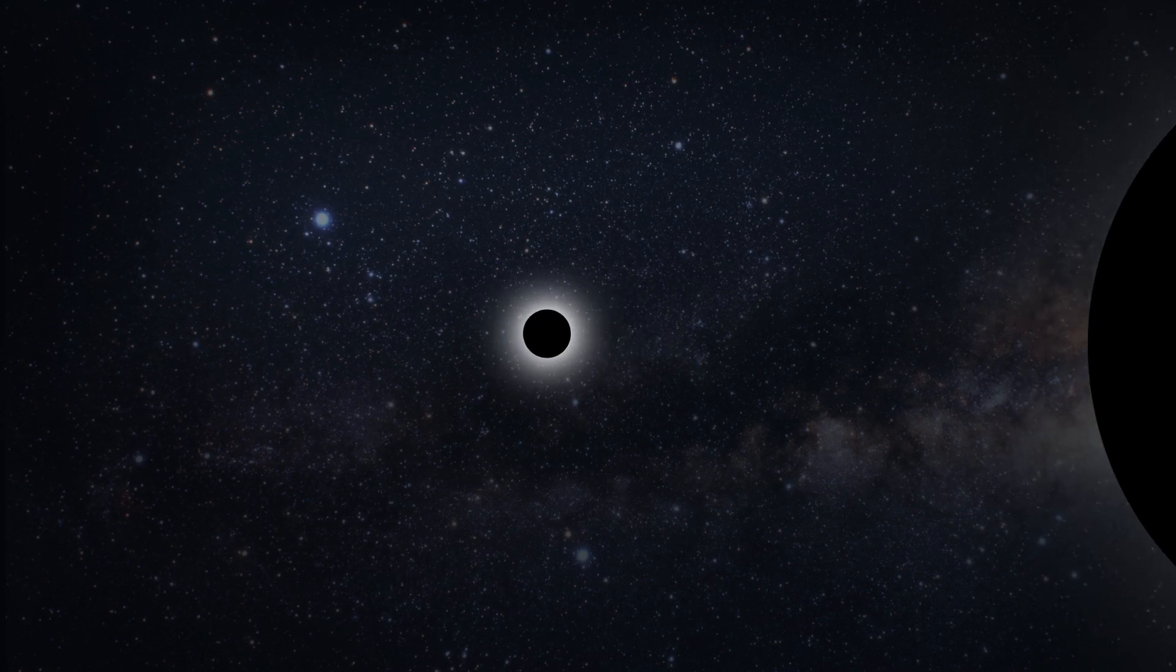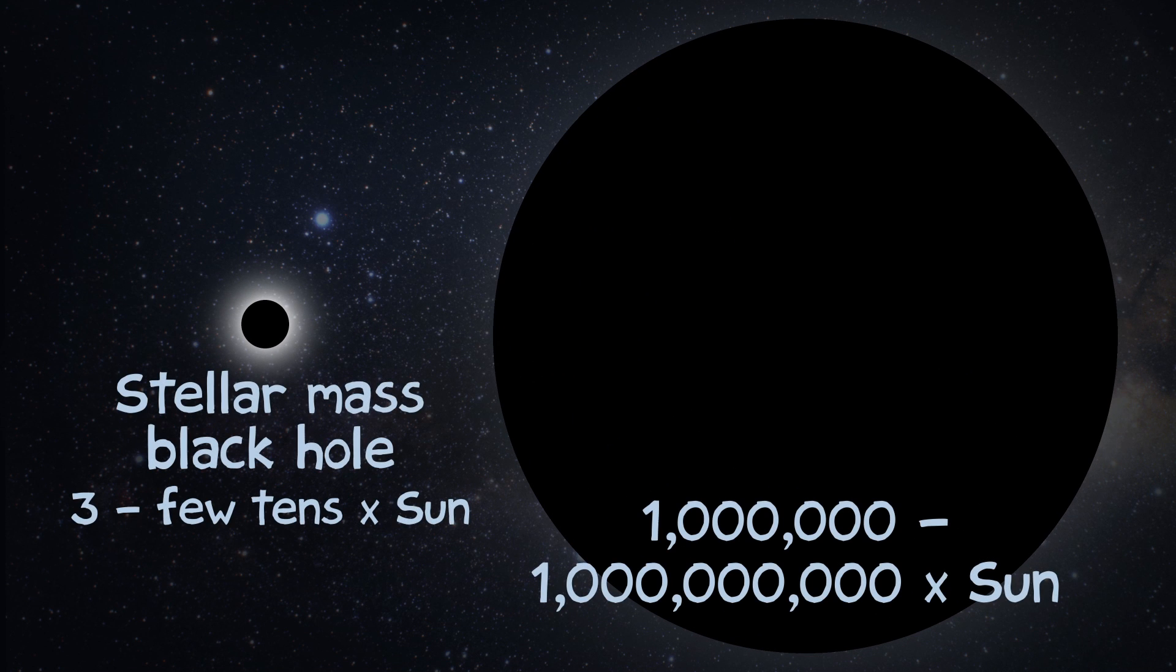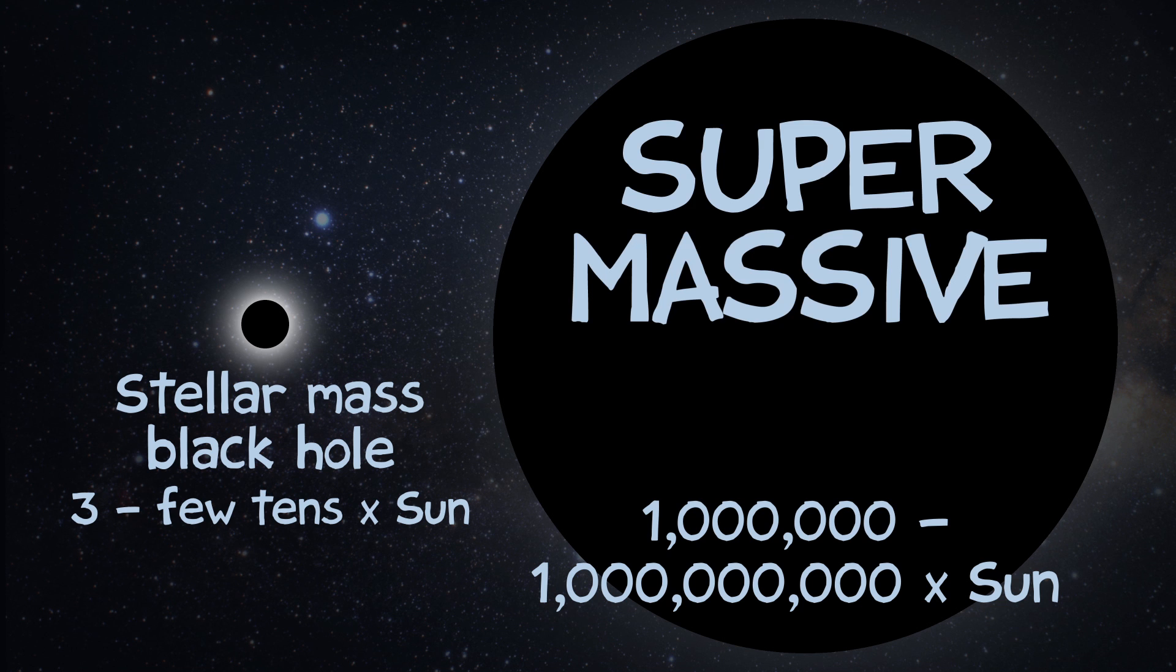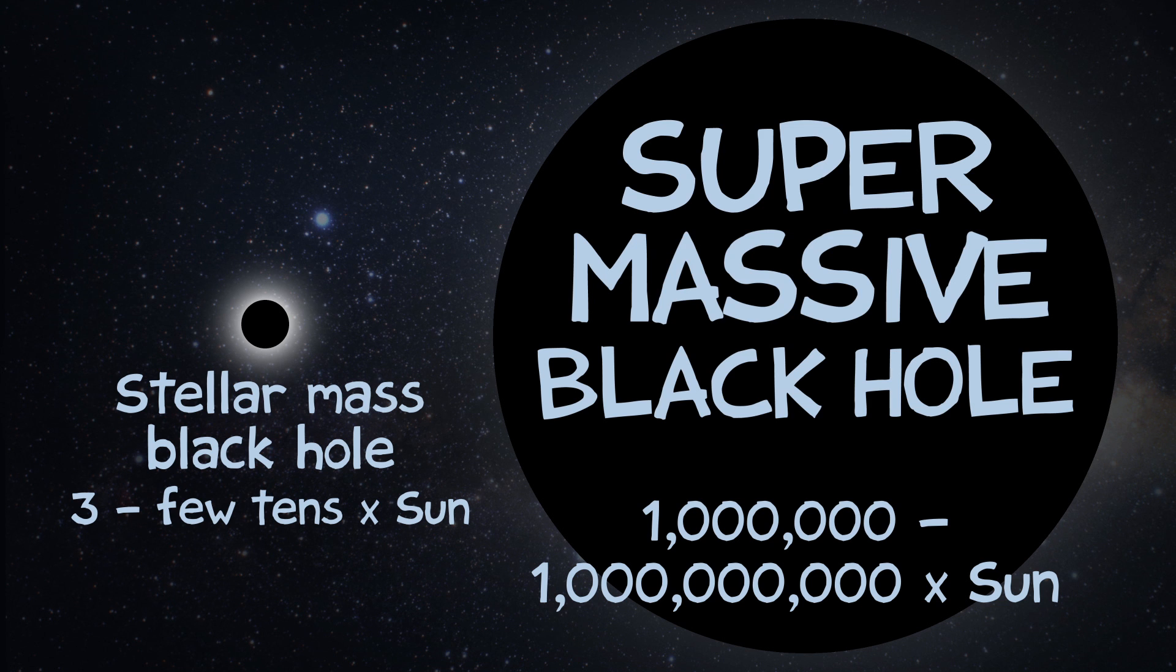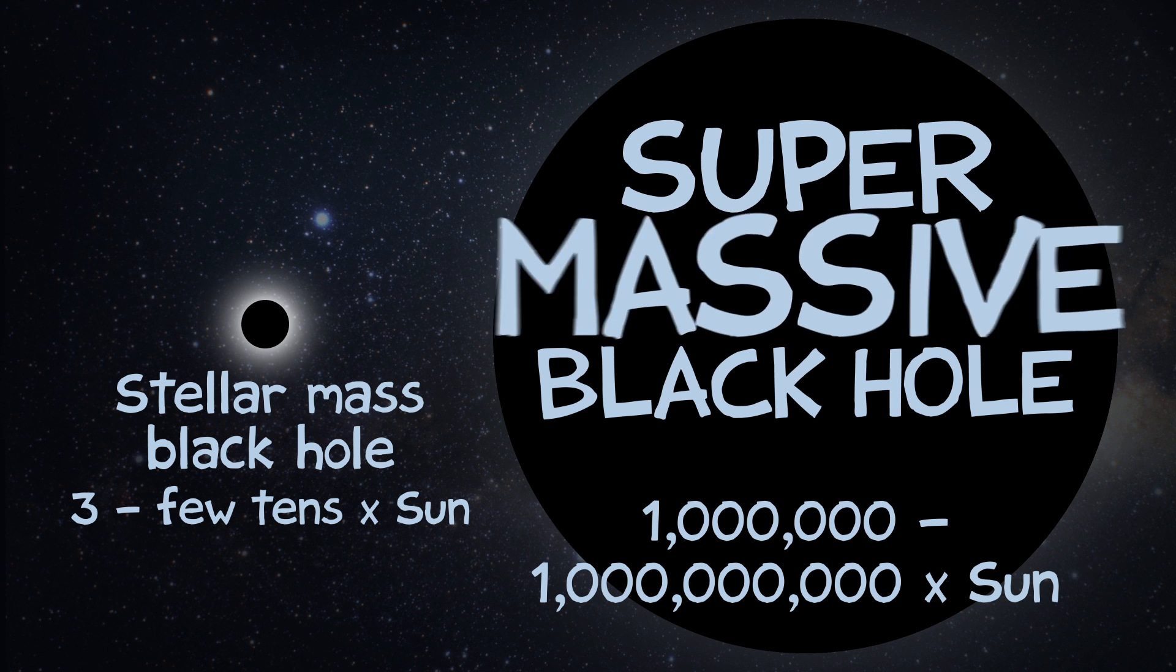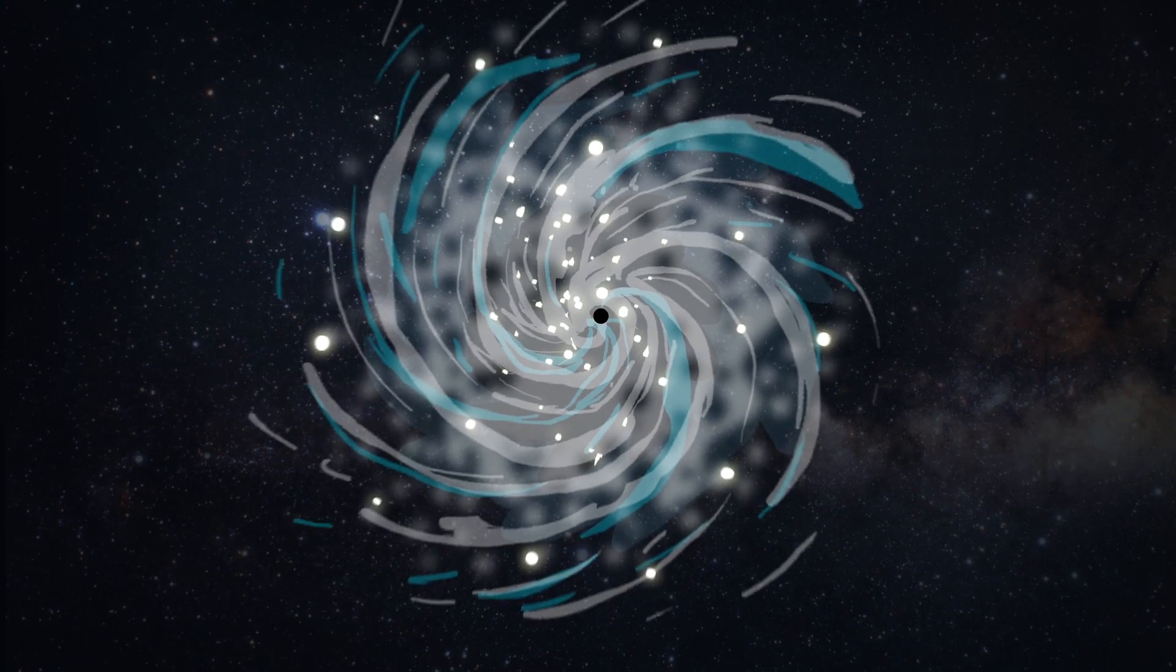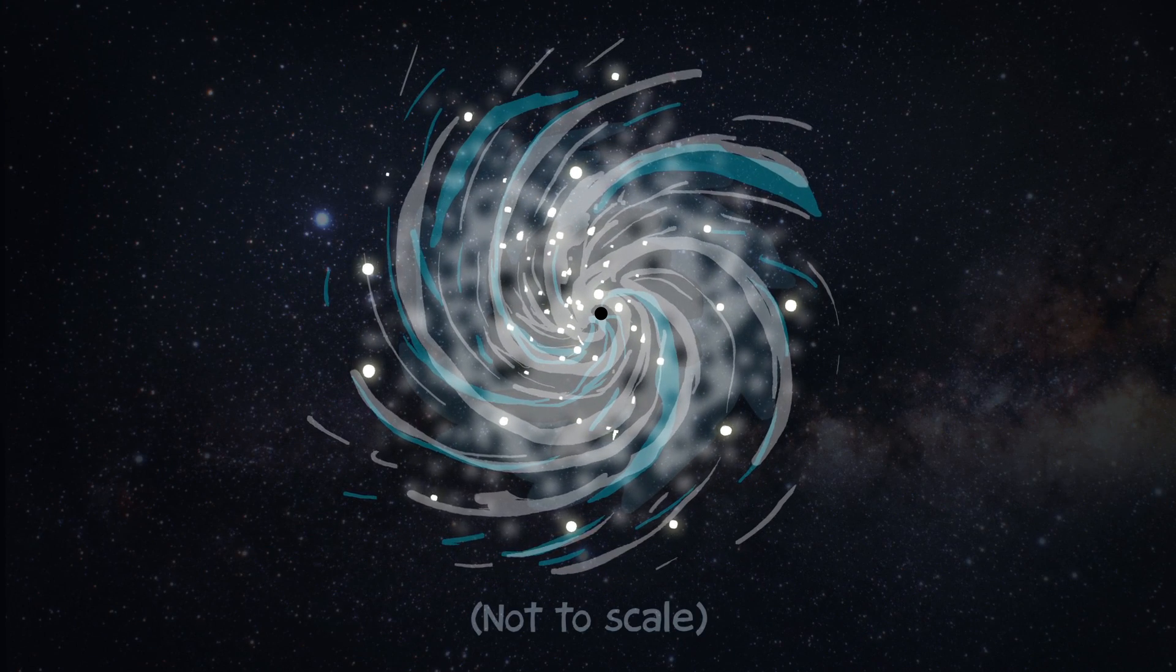But then there are black holes that are much, much bigger. So a million to a billion times the mass of the sun. And those are called supermassive black holes. Not just massive, that's not good enough, it's gotta be supermassive. And turns out that every big galaxy has a supermassive black hole at the center.